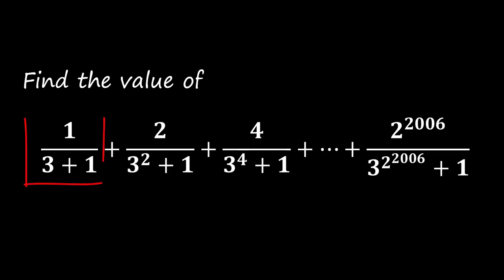Find the value of 1 over 3 plus 1, plus 2 over 3 squared plus 1, plus 4 over 3 to the power of 4 plus 1, all the way to 2 to the power of 2006 over 3 to the power of 2 to the power of 2006 plus 1.